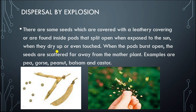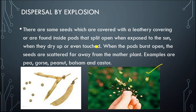All the seeds inside will go out. Look at this picture — one pod has completely exploded. Balsam is also an example of dispersal by explosion. When pods dry up or sunlight reaches them, they burst open and the seeds are scattered from the mother plant. Some examples are peas, gourds, peanut, balsam, and castor.